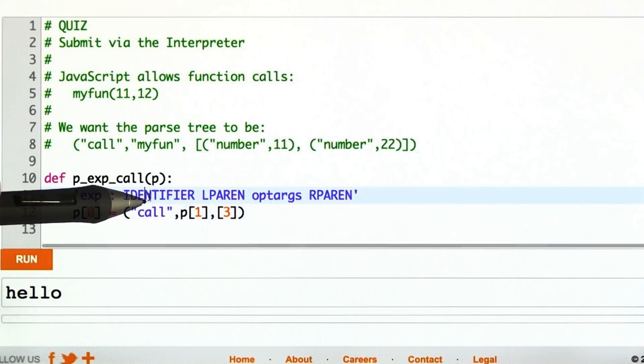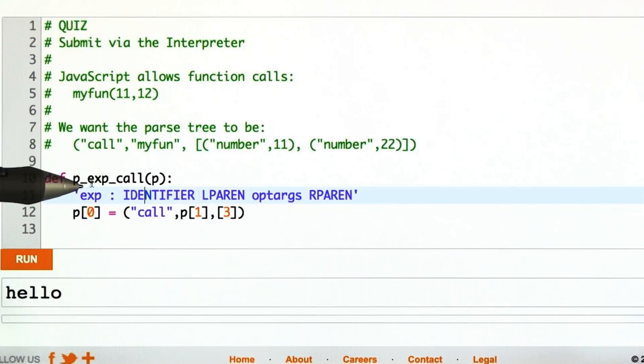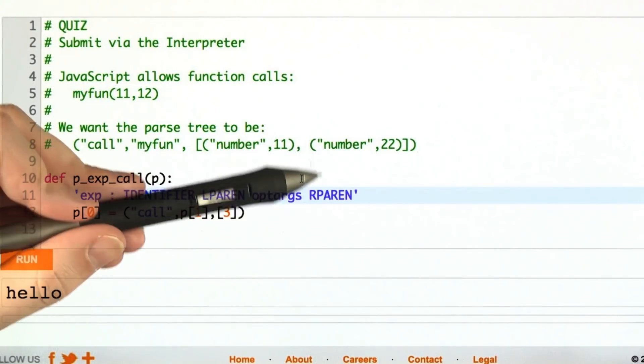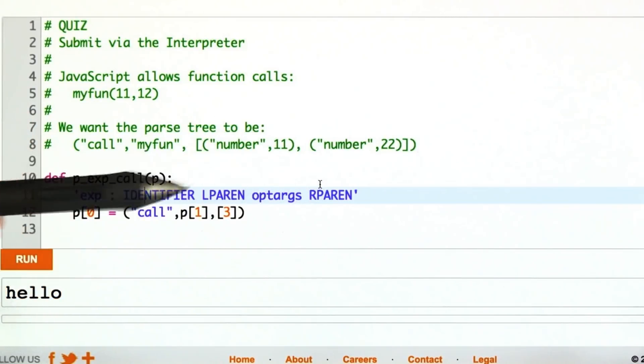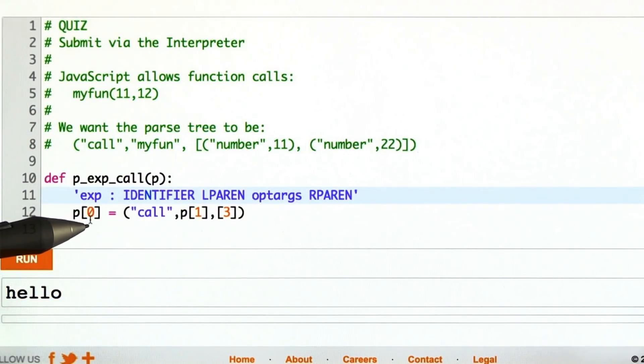And in fact, I'll do the first and second parts for you. Here's a rule for making expressions that are function calls. That's an identifier, like myfun, followed by a left parenthesis, followed by some optional arguments, followed by a right parenthesis.